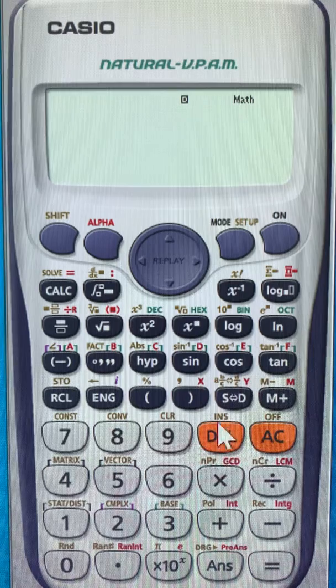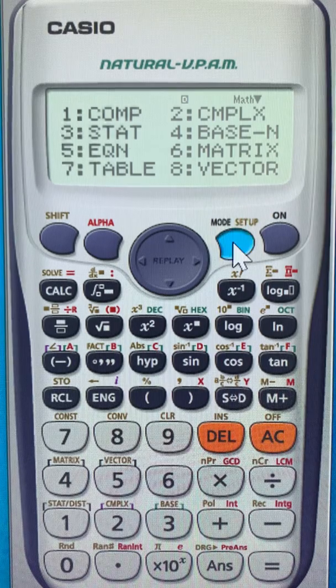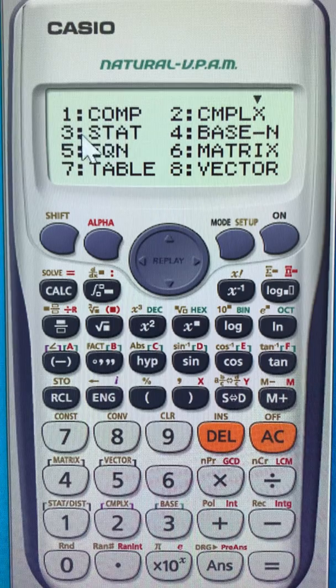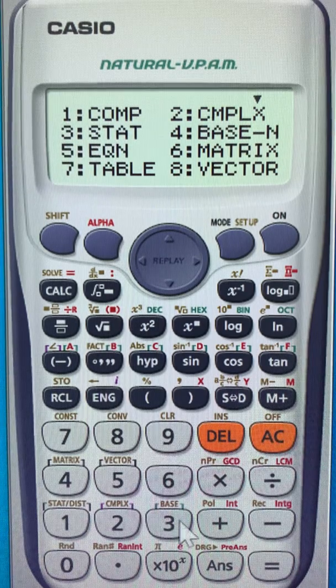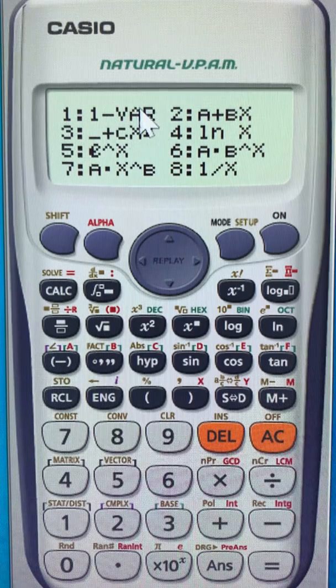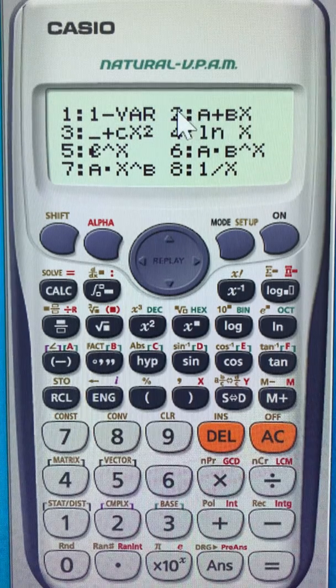The first thing you need to do is go to mode and choose statistics, which is number 3. So you'll put 3. From here you want the linear regression which is number 2, so you press 2.